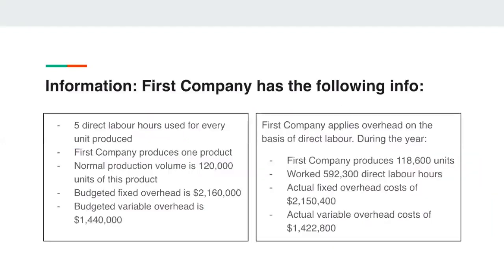In this question, the following information is key. First Company has the following information: five direct labor hours used for every unit produced. First Company produces one product. Normal production volume is 120,000 units. Budgeted fixed overhead is $2,160,000. Budgeted variable overhead is $1,440,000.